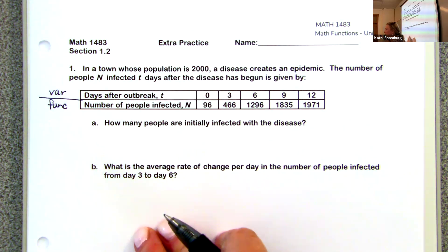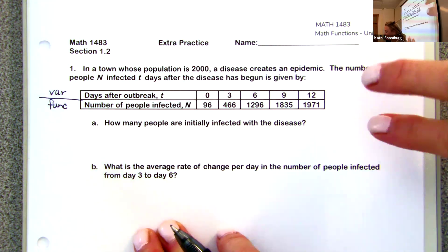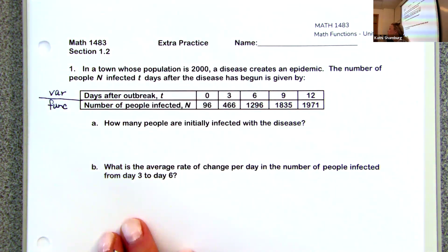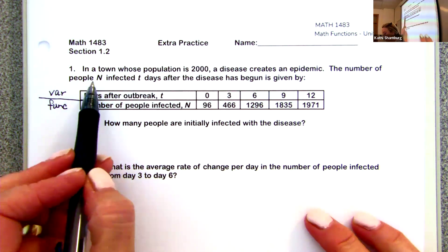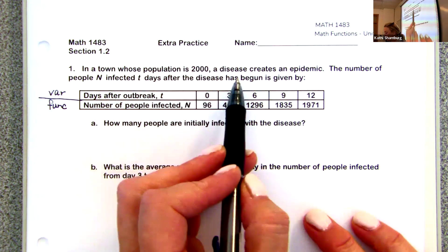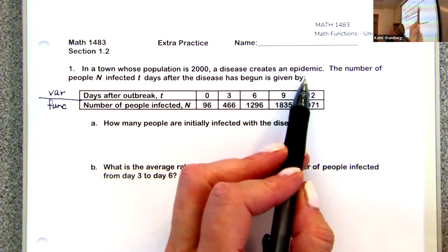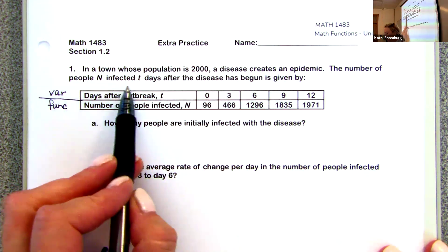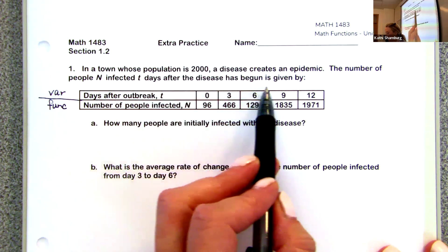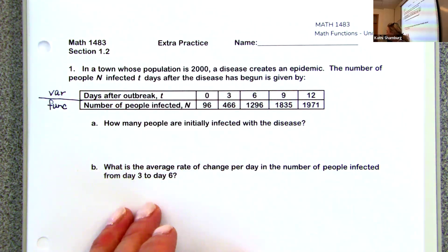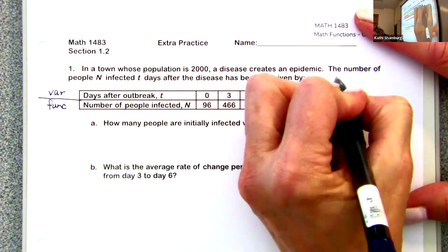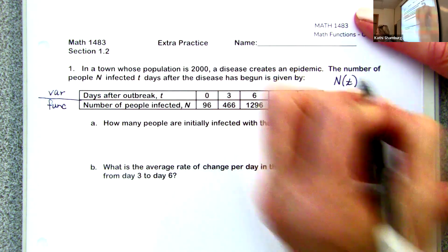I made this error in my 9:30 class, so before defining anything, I'm going to take the time to read the problem. In a town whose population is 2,000, a disease creates an epidemic. The number of people infected T days after the disease has begun — in functional notation, that would be N at T.